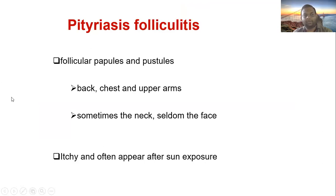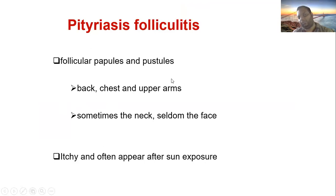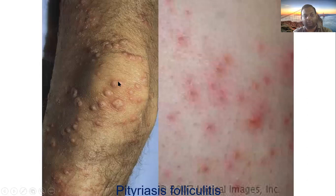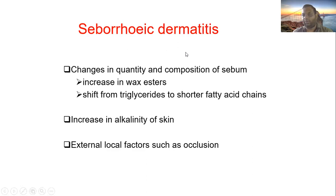Pityrosporum folliculitis presents with follicular papules and pustules. It is a more troublesome condition compared to Pityriasis Versicolor. The back, chest, neck, and upper arms are commonly affected, rarely the face. Lesions are itchy and often appear after sun exposure. Seborrheic dermatitis involves a change in quality and composition of sebum — increased wax esters and a shift from triglycerides to short-chain fatty acids.